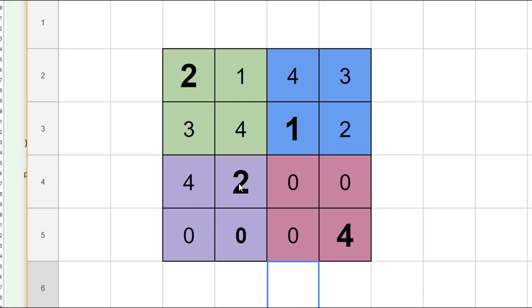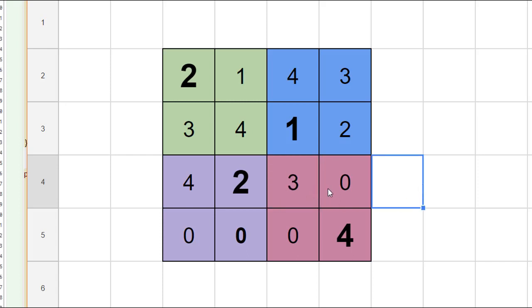Now we follow our algorithm. The next cell is fixed so we have nothing to do there. We come over here — can't put a one, can't put a two — so we're going to put a three here. When we come to the next square we realize that we can put a one here.